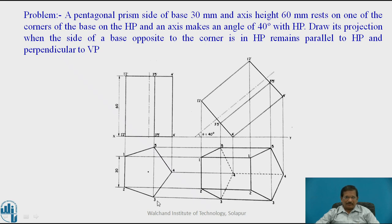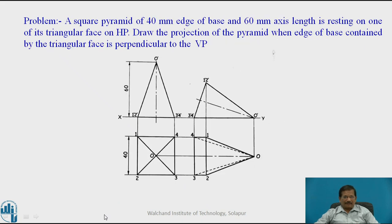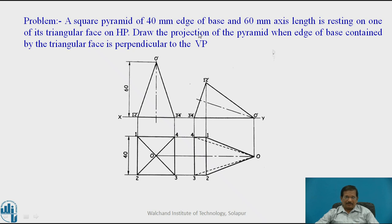This is the two-stage problem. Now we will switch over to another problem involving a pyramid. A square pyramid of 40 mm edge of base and 60 mm axis length is resting on one of its triangular faces on HP. Draw the projections of the pyramid when the edge of base contained by the triangle is perpendicular to VP.